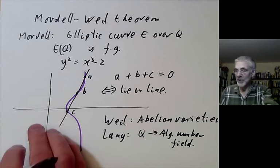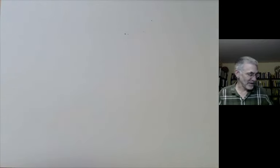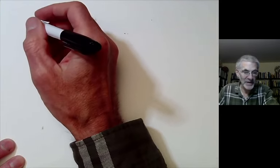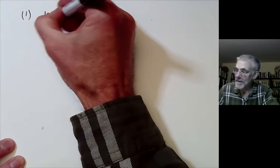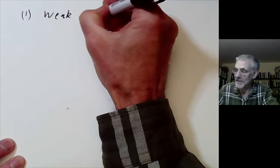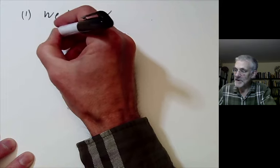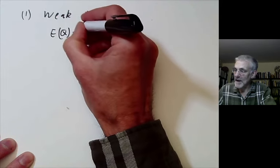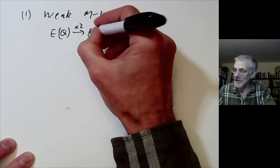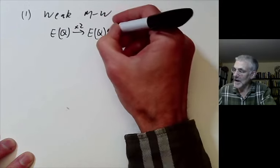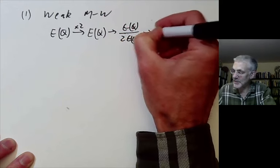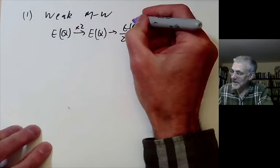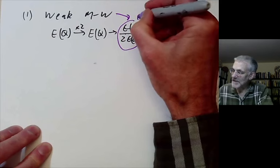The proof of the Mordell-Weil theorem basically follows Mordell's original argument with various improvements, although Mordell would probably not have considered them improvements. First, we prove the weak Mordell-Weil theorem. For this, you take the group of points over the elliptic curve and multiply them all by 2 using the group law on the elliptic curve. We get a group E(Q) over 2E(Q) as the quotient. The weak Mordell-Weil theorem says that this group here is finite.